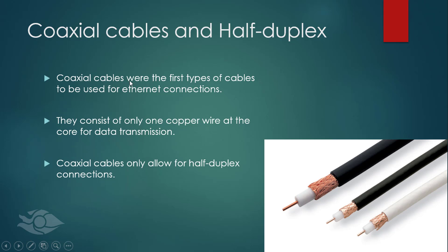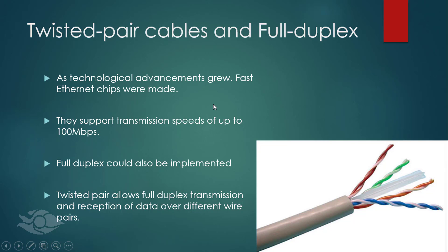The coaxial cables were the first types of cables used for Ethernet connections, and they consist of only one coupled wire for data transmission. This is why only half duplex communication can be implemented with coaxial cabling.